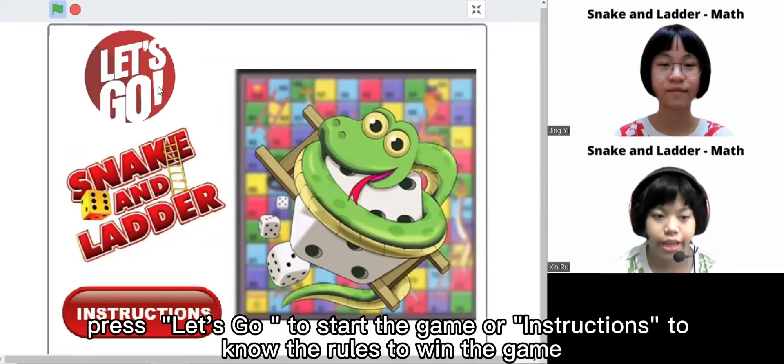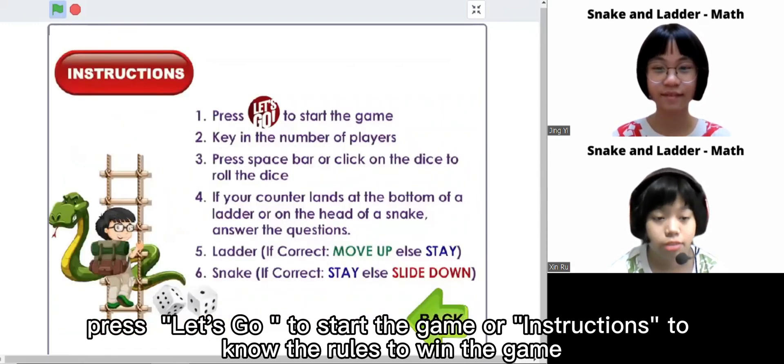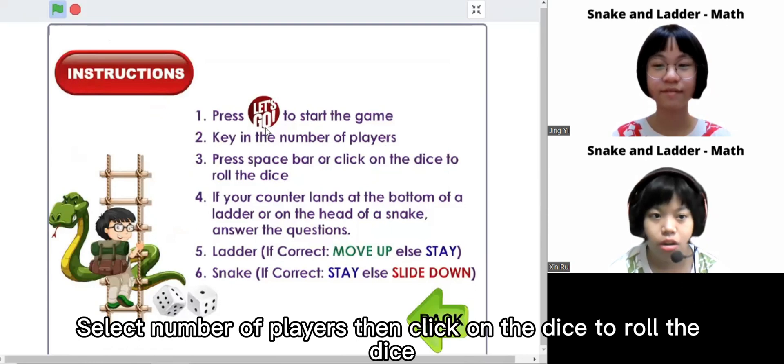At the game page, press let's go to start the game or instruction to know the rule to win the game. To start the game, select number of player then click on the die to roll the dice.